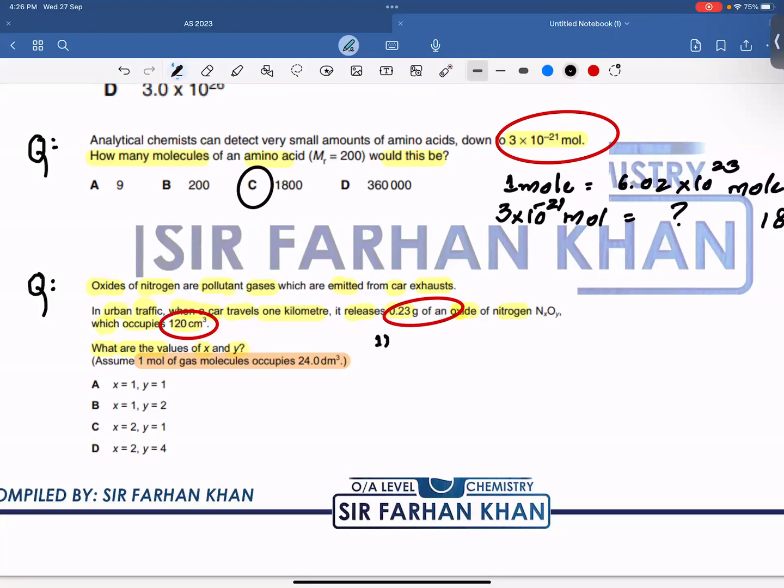So sabse pehla step mera kya hoga? Moles of oxide. Or moles of oxide ke liye volume hai mere paas, 120. Isko divide kar dijiye aap 24,000 cm³ se. I'm using cm³ because yeh bhi cm³ mein hai. So yahan se humare paas moles aajayenge. 120 divided by 24,000. So it's going to be 5 into 10 to the power minus 3.